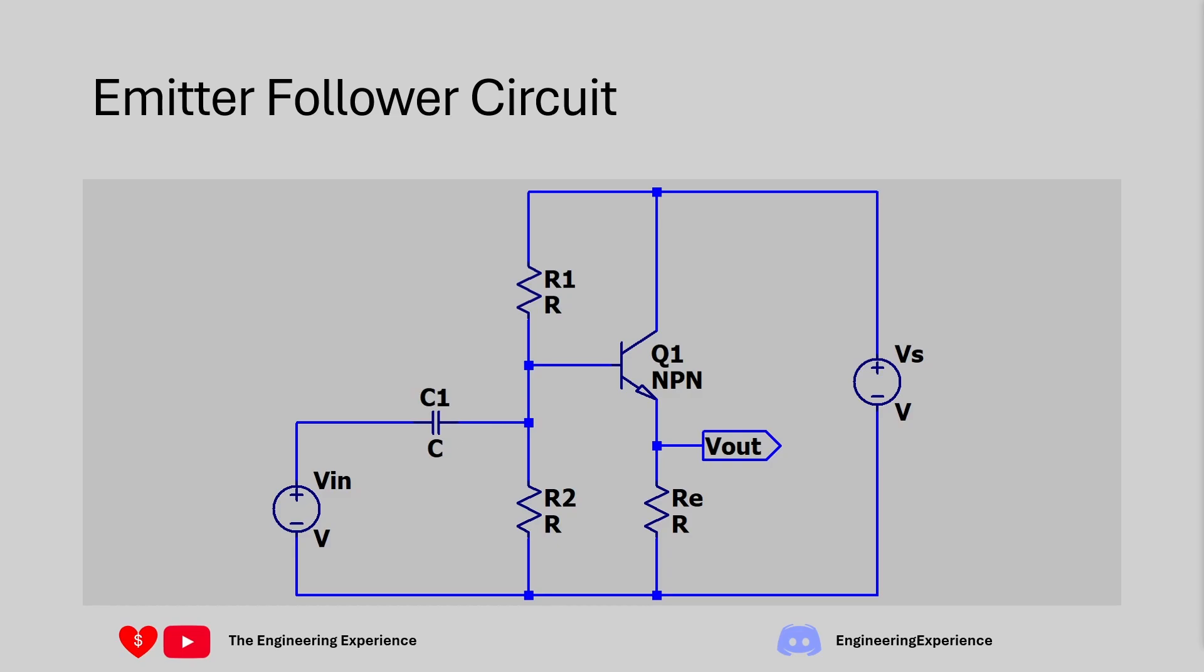The cutoff frequency for the AC signals will be dependent on these two resistors, the capacitor value, and a function of RE and the beta of the transistor. This is important because we want our transistor to amplify only AC signals and we don't want any interference from DC for the question.